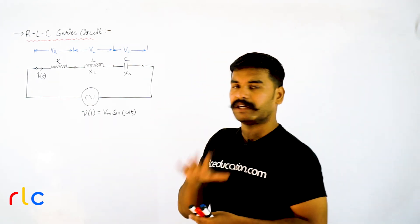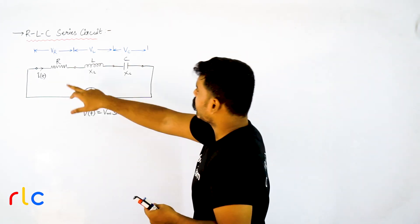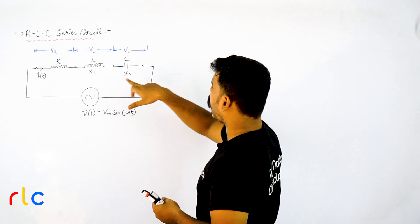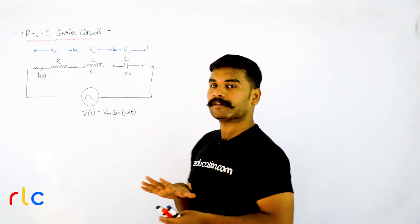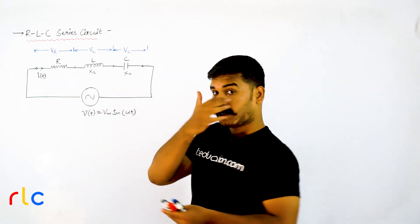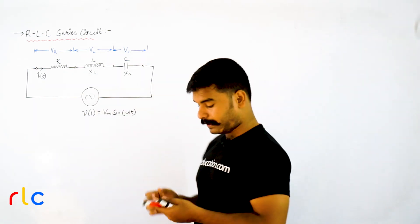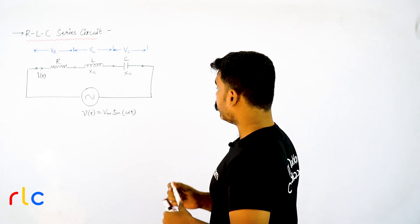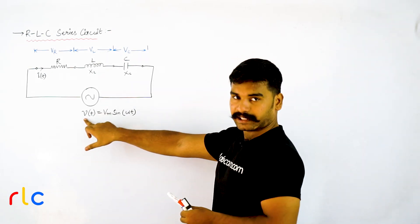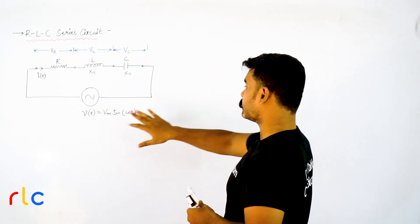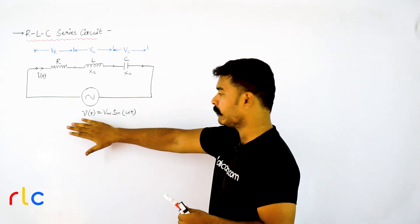Now what we are going to do is a very interesting thing. We will place all three — R, L, C — in series. In series we are going to place R, L, and C, and I am applying some AC sinusoidal voltage: V equals Vm sine omega t.